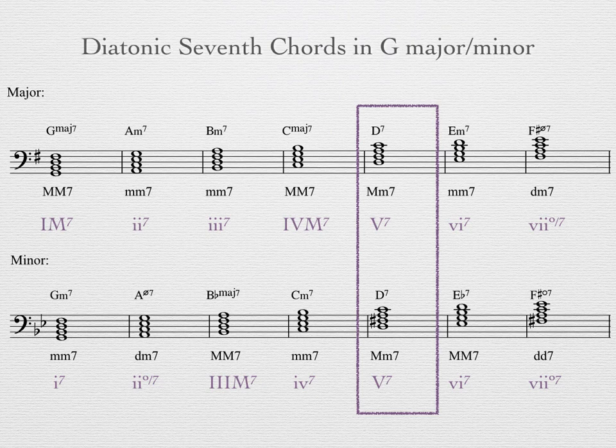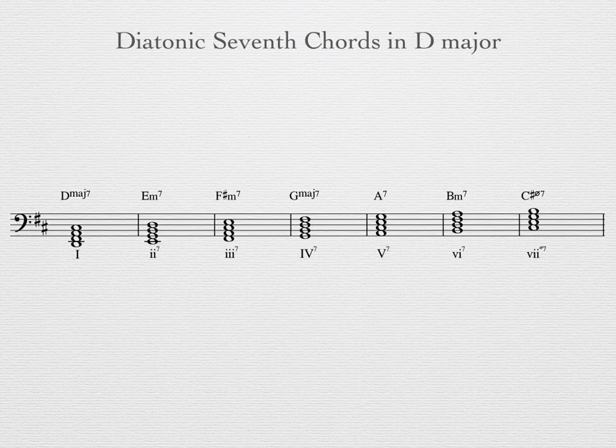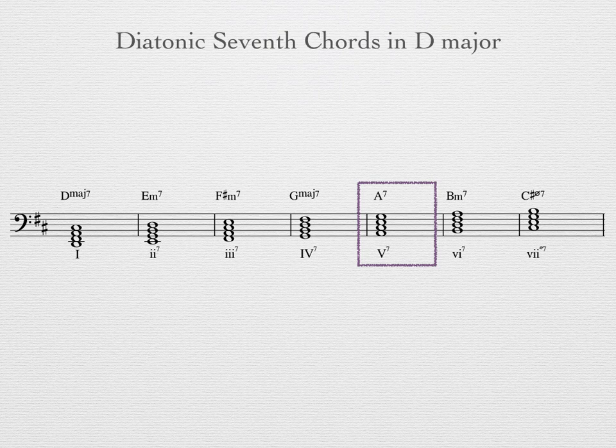If we consider an A dominant 7th chord to be a temporary 5th scale degree, what is the temporary tonic? The key of D major contains an A dominant 7th chord on scale degree 5, and could be a temporary tonic for the dominant 7th chord to tonicize. To tonicize is to make a different pitch other than tonic feel like a tonal center, but only briefly.